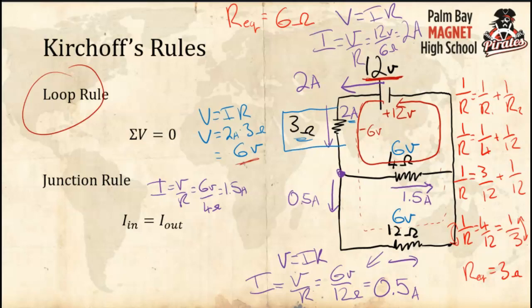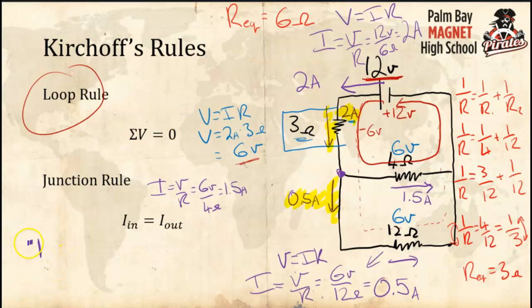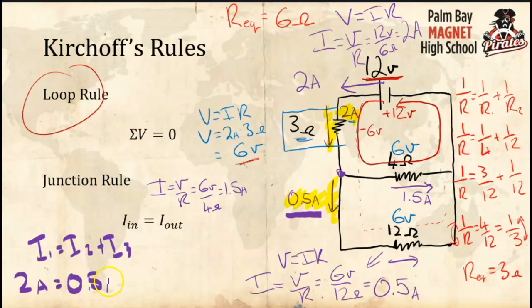For the 4-ohm resistor, I can either calculate directly — I = 6 volts / 4 ohms = 1.5 amps — or I can use the junction rule. I know 2 amps flows into the junction and 0.5 amps comes out through the 12-ohm branch, so the remaining current is 2 − 0.5 = 1.5 amps through the 4-ohm branch. Both methods give the same answer; if they don't match, you've made an error somewhere.